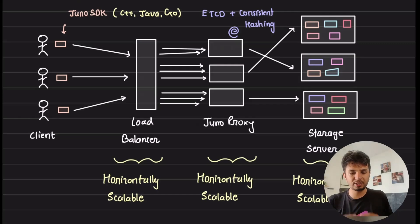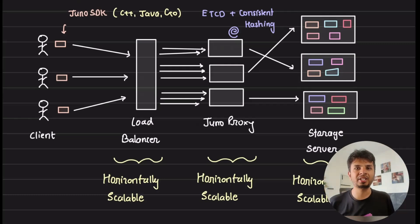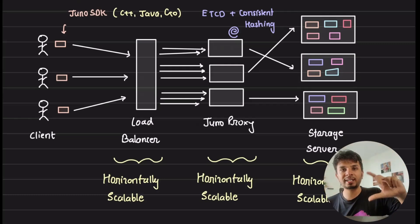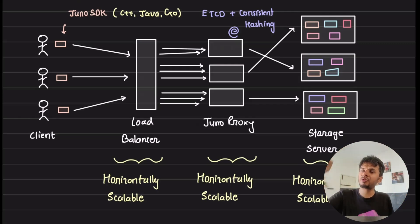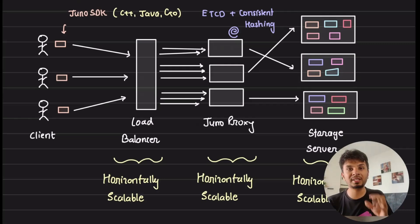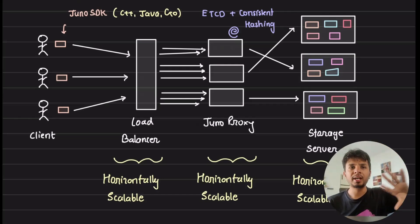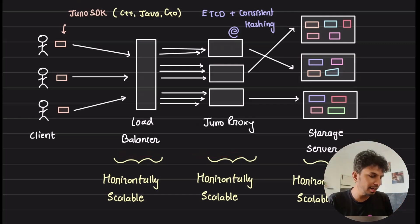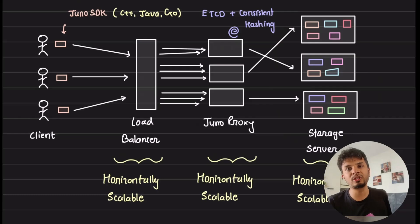That covers the JunoDB architecture — the importance of the proxy, the use of consistent hashing, the use of etcd for strongly consistent distributed configuration across Juno proxies, and horizontally scalable storage servers. In the next video of this series, we'll go deeper into how the storage layer is actually scaled and why it is so important for a database like JunoDB.